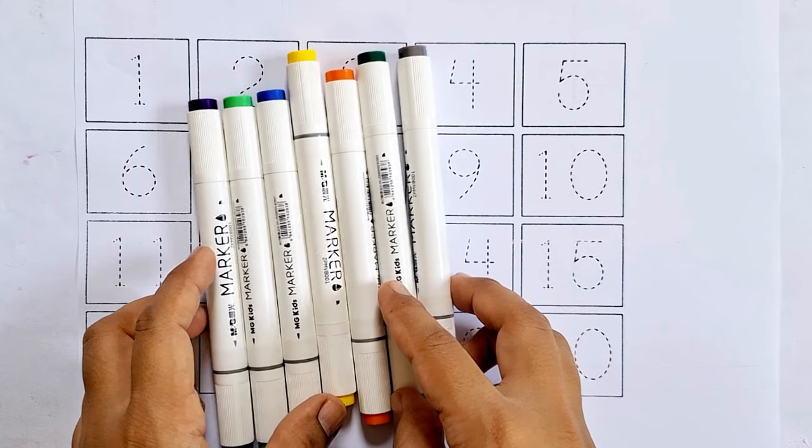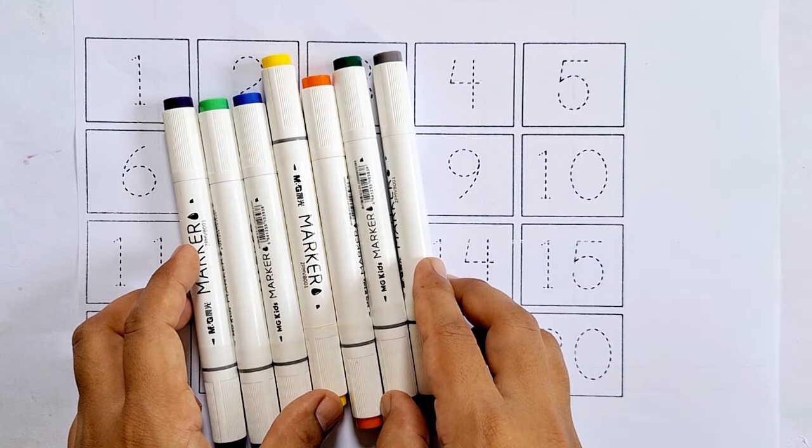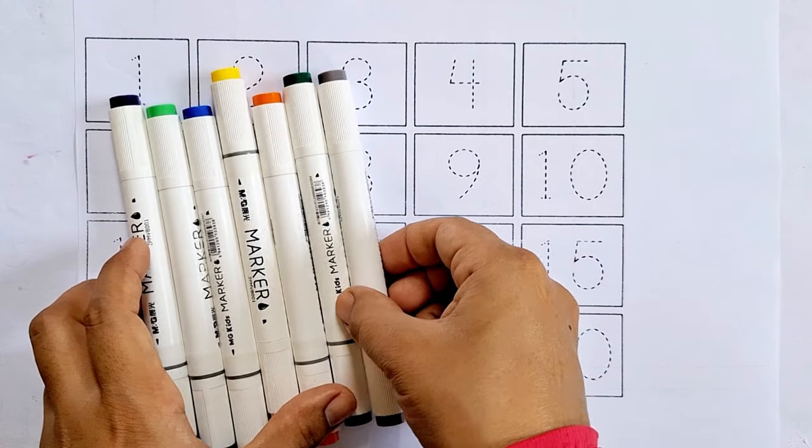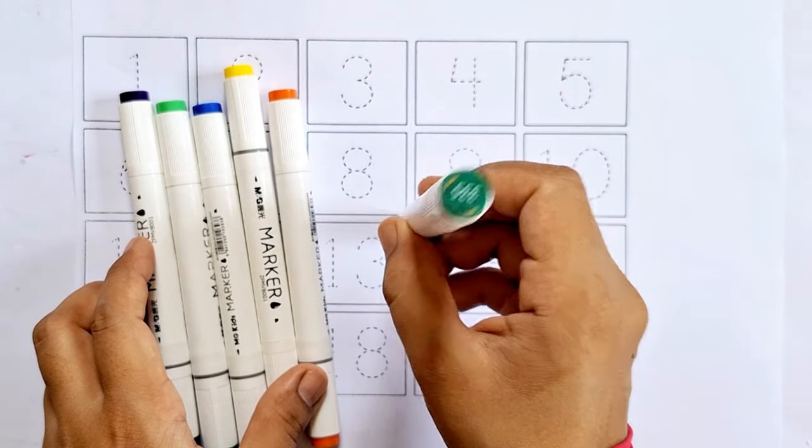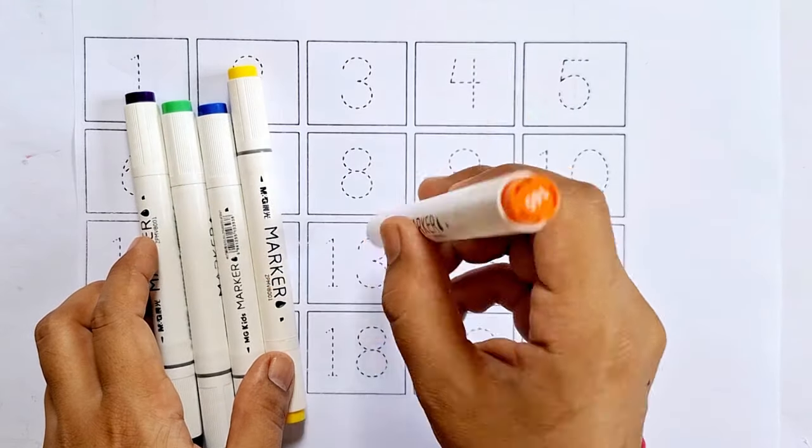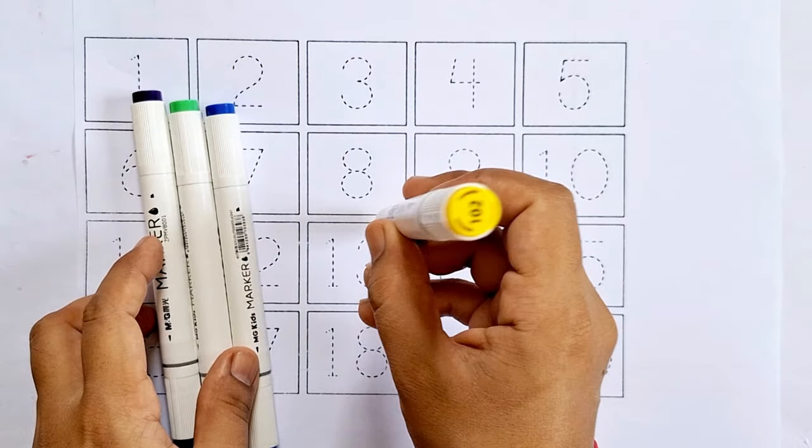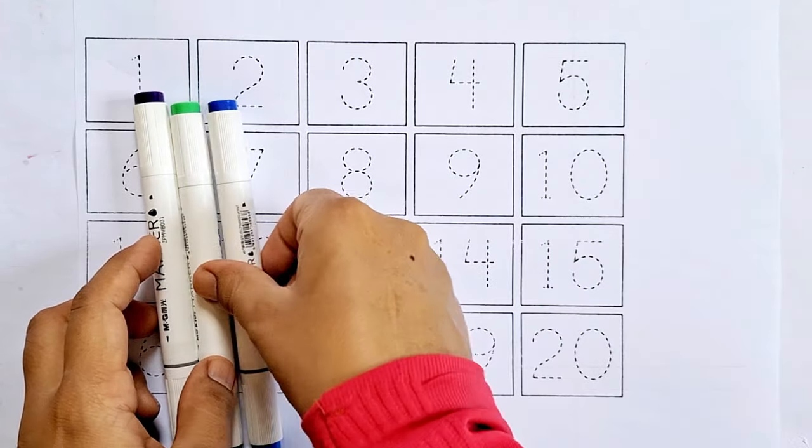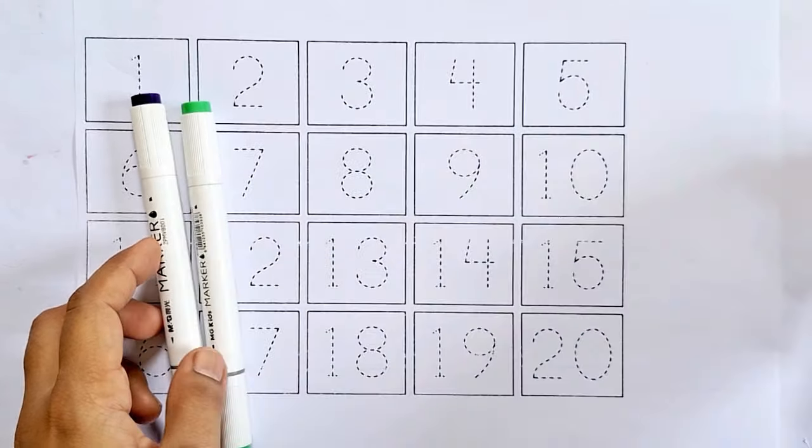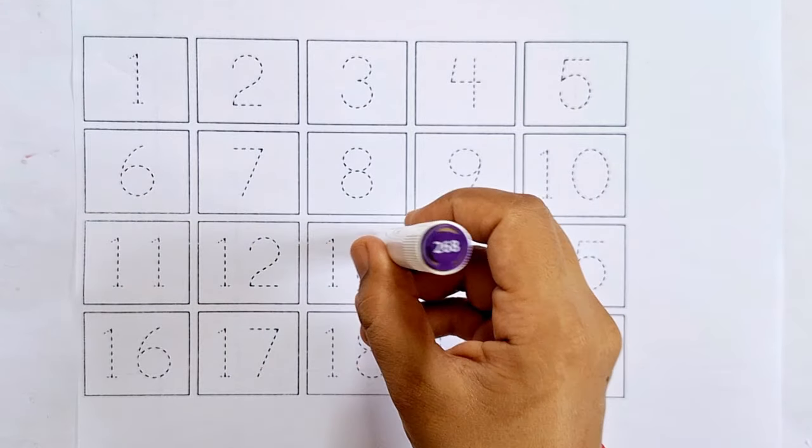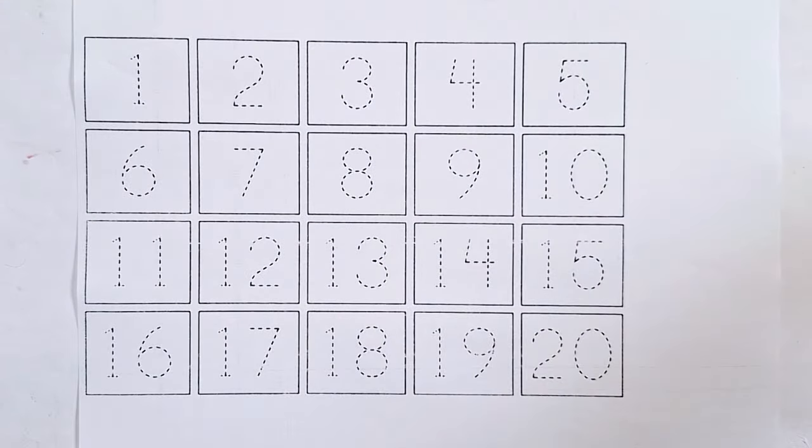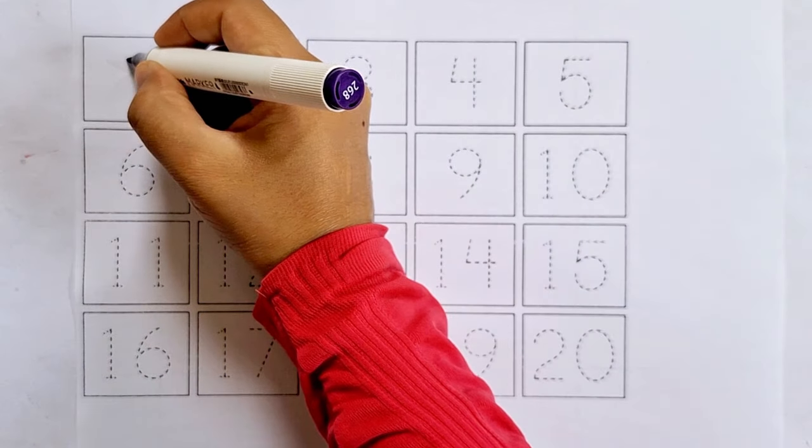Let's get started, but before we begin, let's learn some colors. Gray color, dark green color, orange color, yellow color, dark blue color, light green color, purple color.